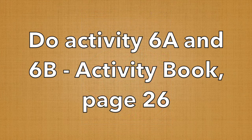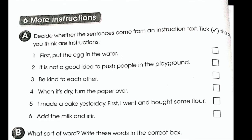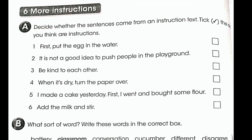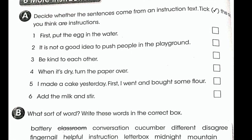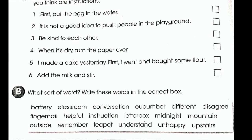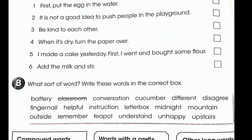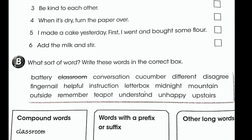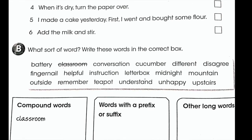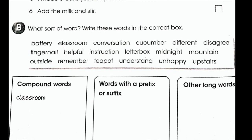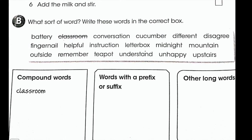Let's do the activity on page 26 of our activity book. Do activity 6a and b only. For activity 6a, read the sentence and decide if it comes from an instruction or not. If you think it comes from an instruction, tick the box. For activity 6b, read the words in the box and decide if they are compound words, words with a prefix or suffix, or just another long word. Arrange the words in the table below.